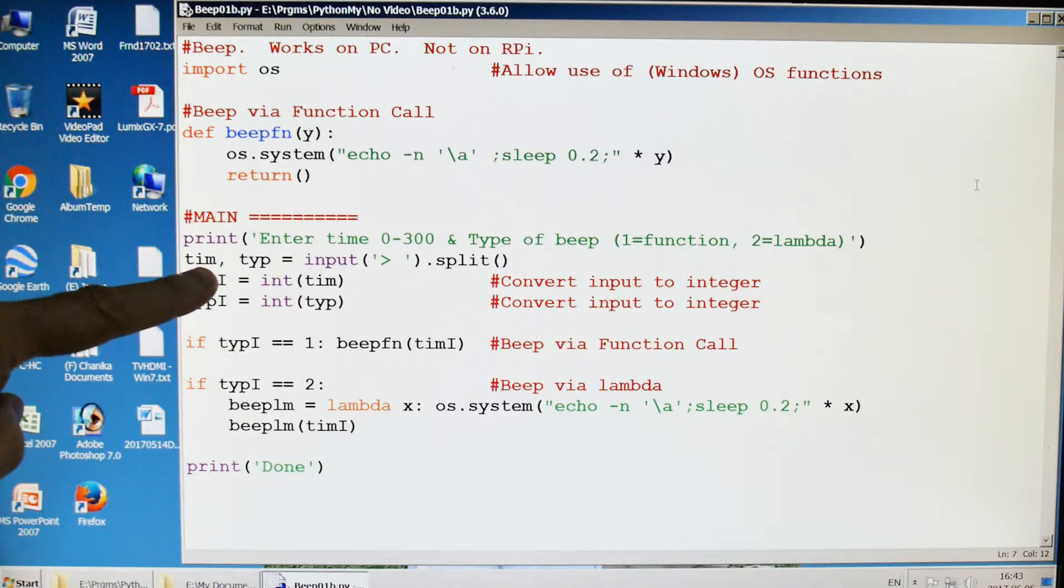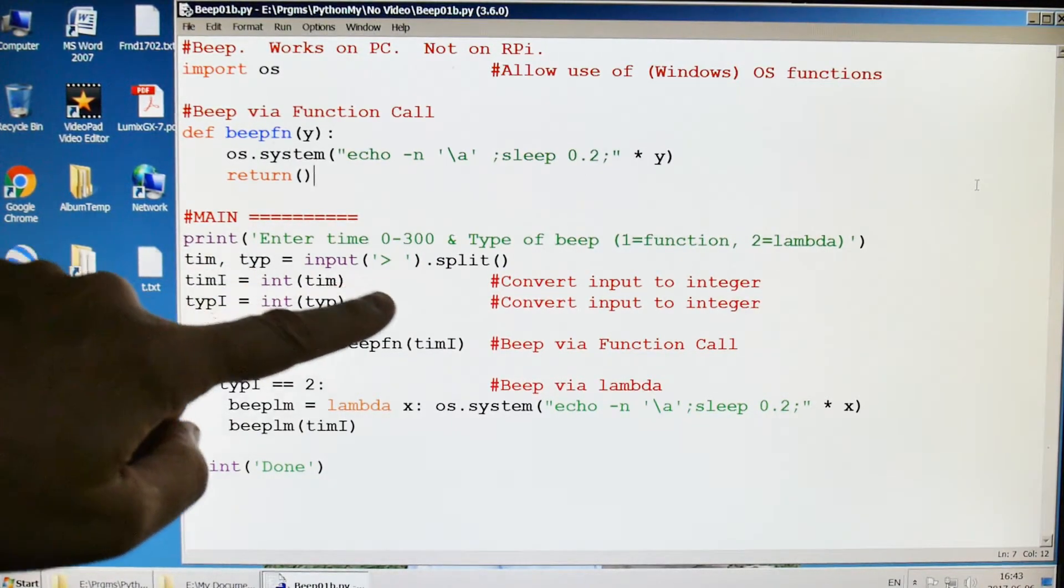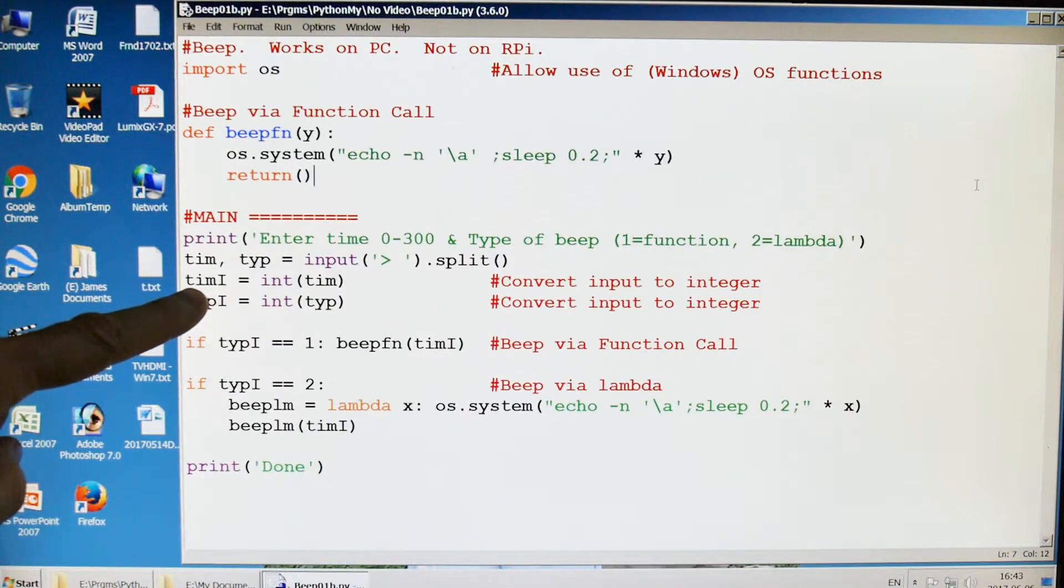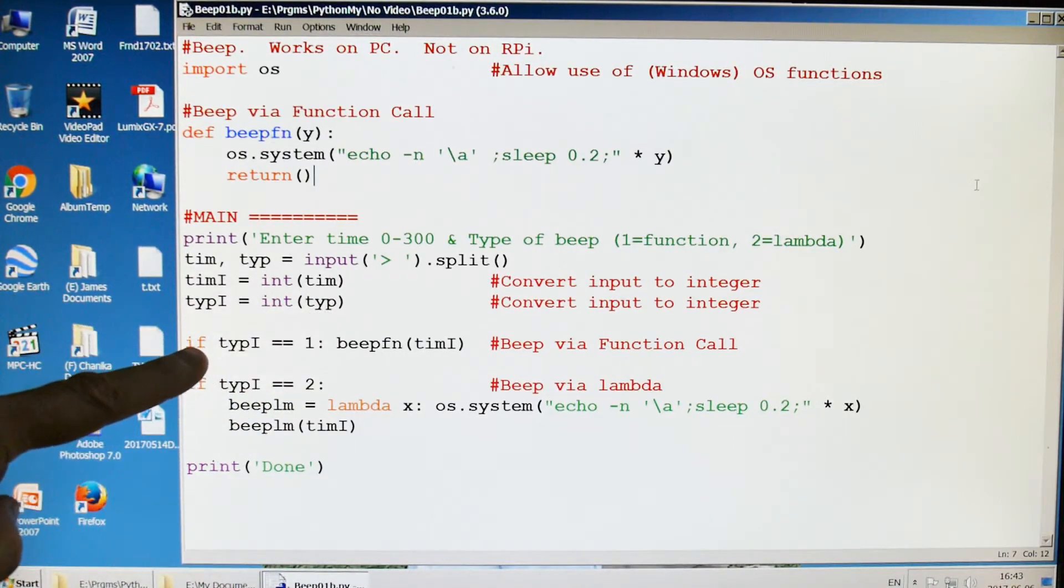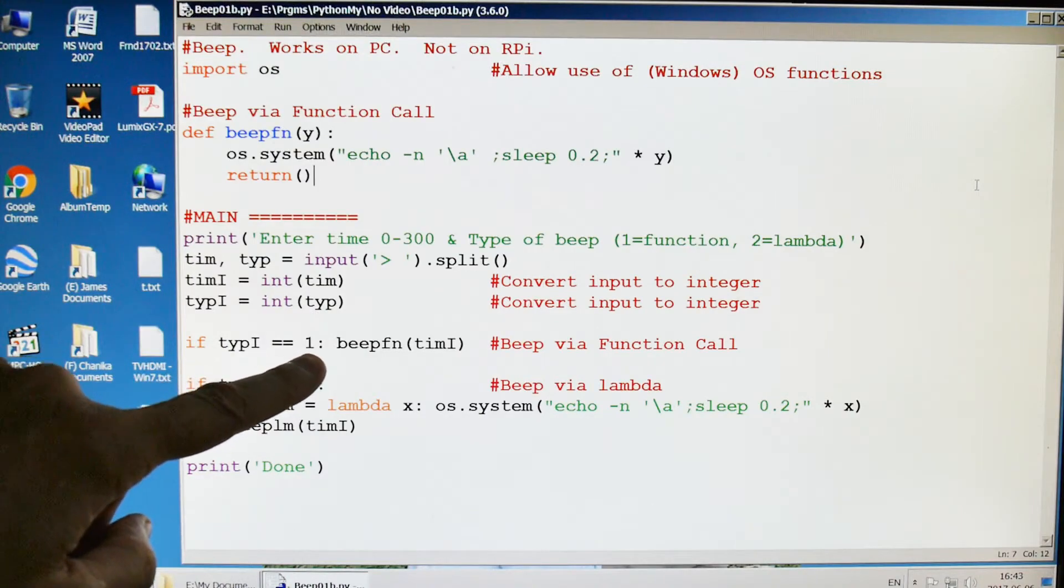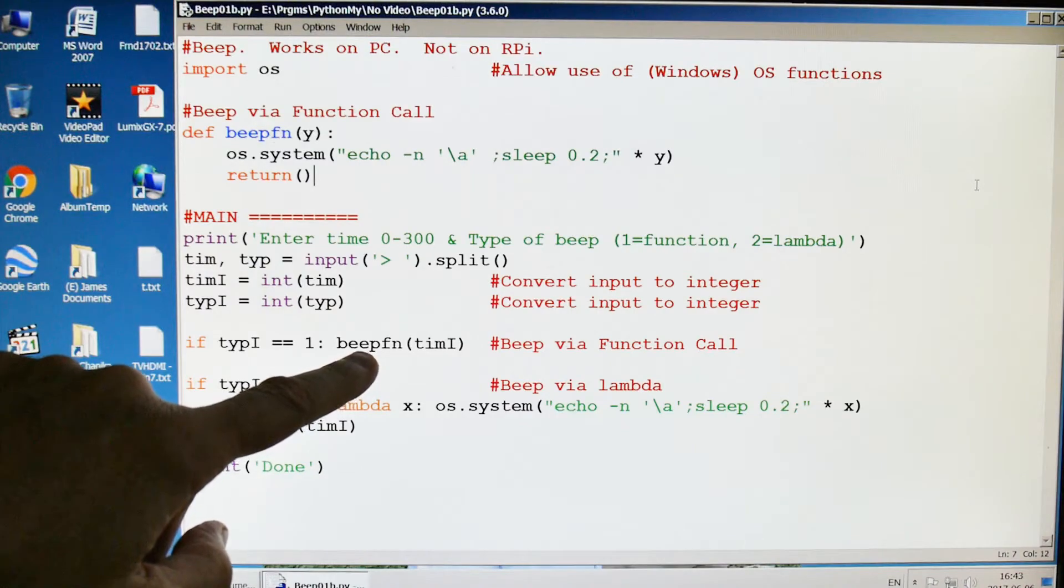We're going to take the input from our user and we're going to split it into time and type by space. And we're going to store the time value, the integer of time value into time_i and type_i like this. And then we're going to do a quick check to see what the user wanted.